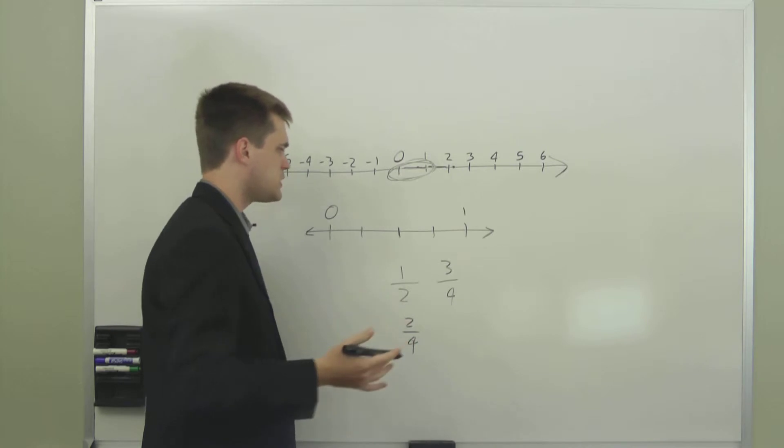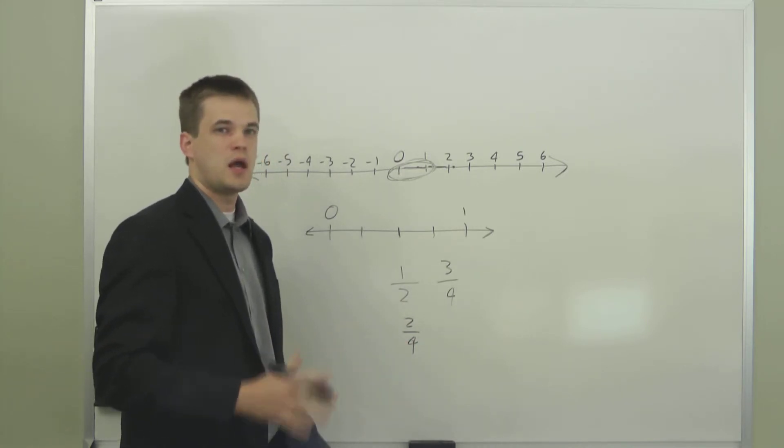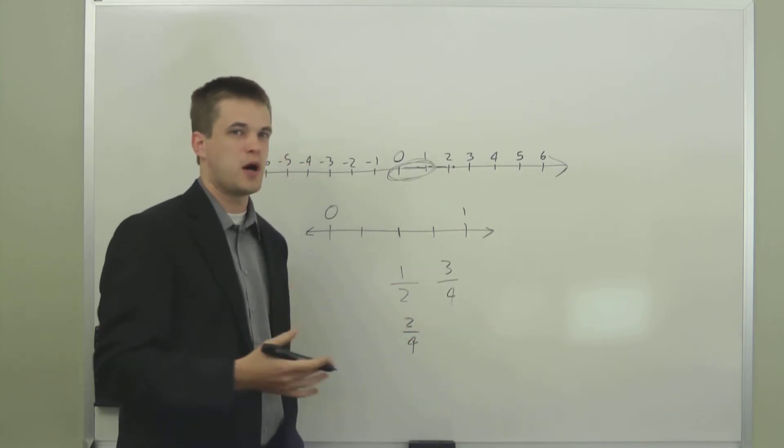But you can divide up the space between the integers into as many sections as you like. You can divide it up into three, you can divide it up into five, seven, ten, any number of parts. And that's the number that will go on the bottom.